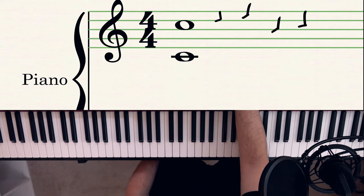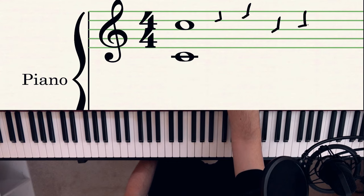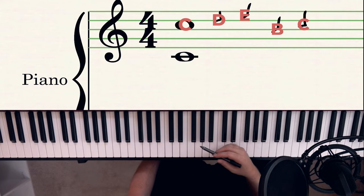Because you know C is that third space up, you automatically know that that has to be D, that's E, that's B, that's C, because you're using that C as a reference point.